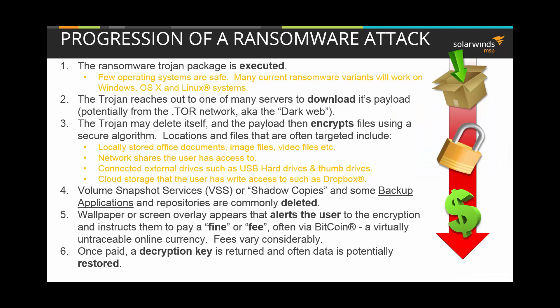Let's discuss the detailed progression of a ransomware attack. It all starts once a ransomware Trojan package is executed. Even if you have updated AV, it may not help you, especially if it's a new variant or strain. This is the point where education may be more important than technology. Few operating systems are safe — many current ransomware variants work on Windows, Mac OS X, and Linux. The Trojan reaches out to one or more locations to download its payload; if lucky, your security software or firewall may prevent this connection. Since encryption doesn't happen all at once — it may take hours or even days — the Trojan may delete itself, and some AV software may be damaged or disabled to prevent updates and reporting. Some AV software may see the attempt to encrypt data and block the process before it causes too much harm.